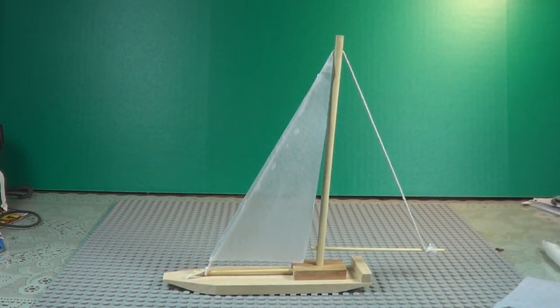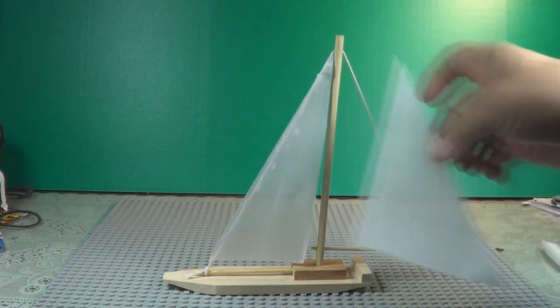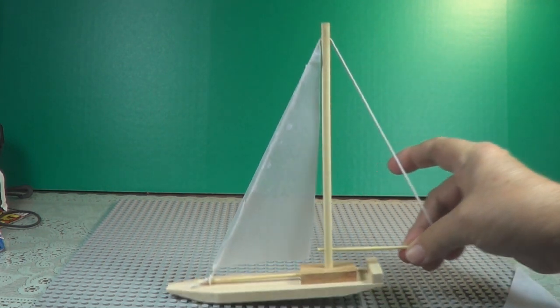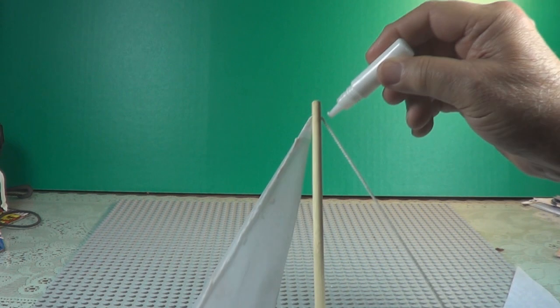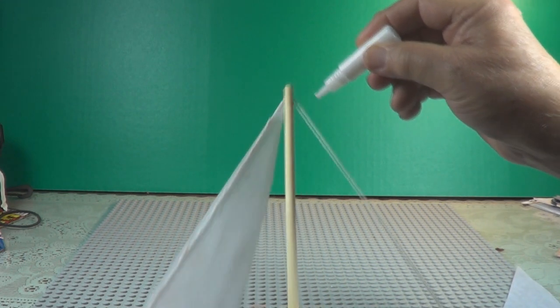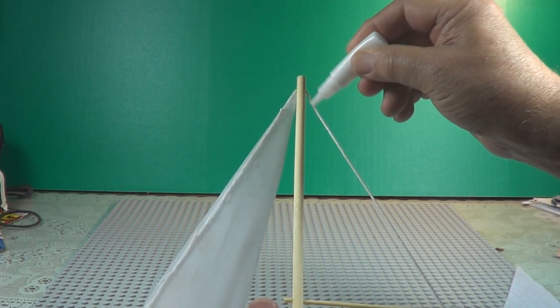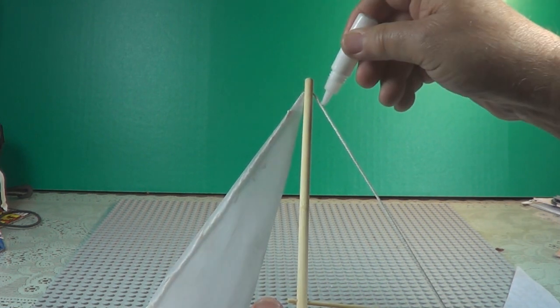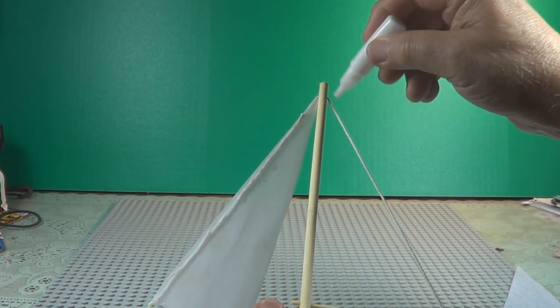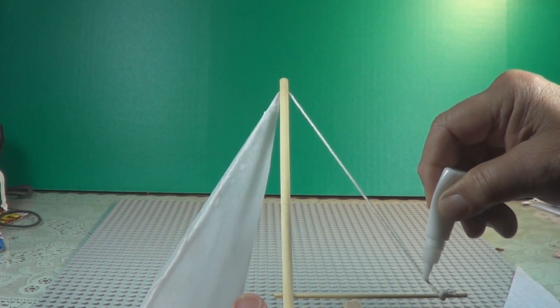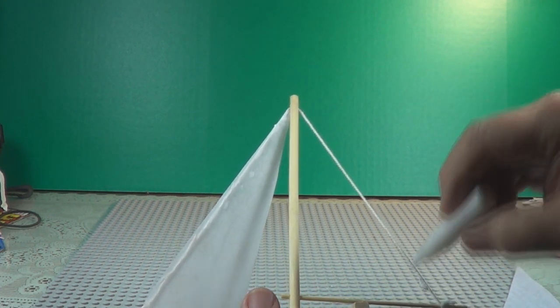And the other sail goes on the back. Right there. Once again we apply glue to the string. Get that glue to come out, there we go.